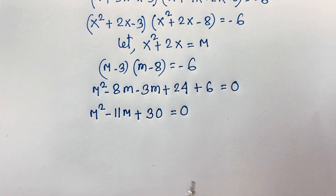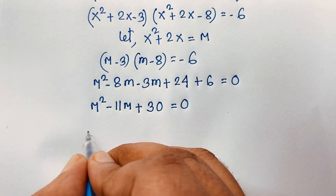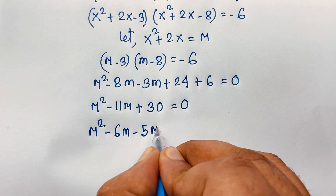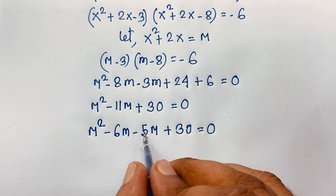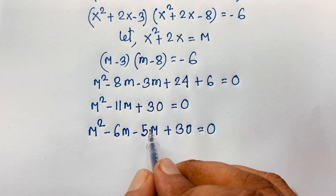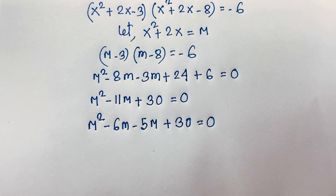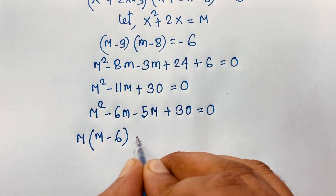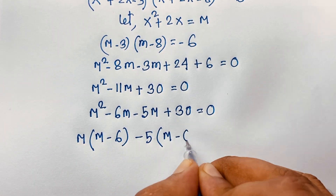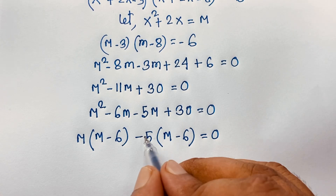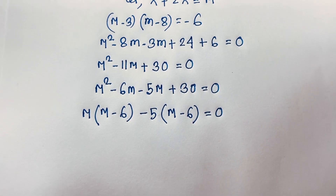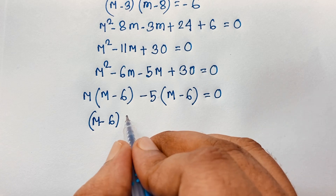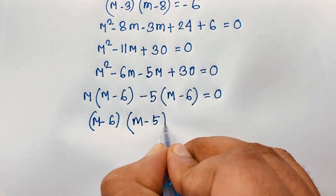Factoring by splitting the middle term: m squared minus 6m minus 5m plus 30 equals 0. Taking m common from the first two terms gives m(m minus 6), and negative 5 common from the last two gives negative 5(m minus 6). So (m minus 6)(m minus 5) equals 0.